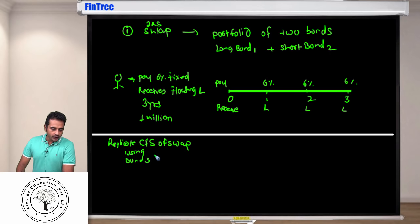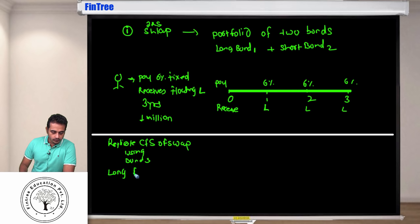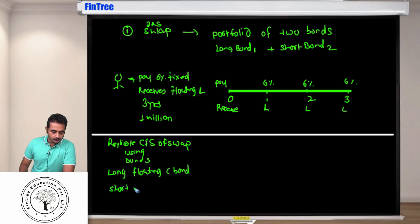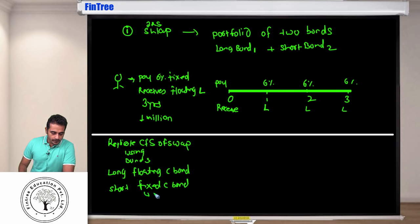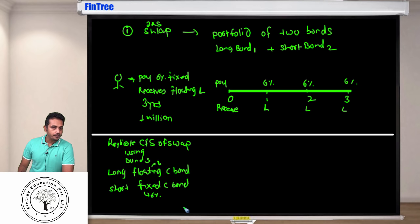The team would recommend: take a long position on a floating coupon bond and a short position on a fixed coupon bond. The fixed coupon should be 6% and the floating coupon should be LIBOR.